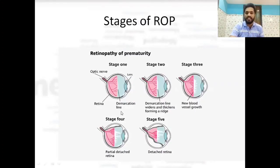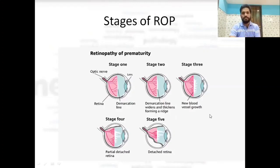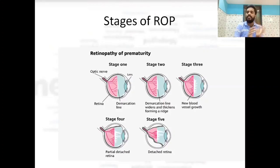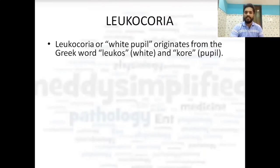Five stages of ROP: Stage 1 — clear demarcation line seen. Stage 2 — the line thickens and forms a ridge. Stage 3 — new blood vessels grow (neovascularization). Stage 4 — retina is partially detached. Stage 5 — retina is completely detached.